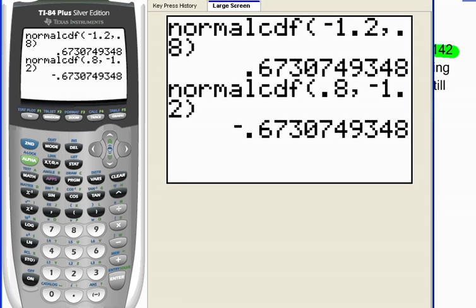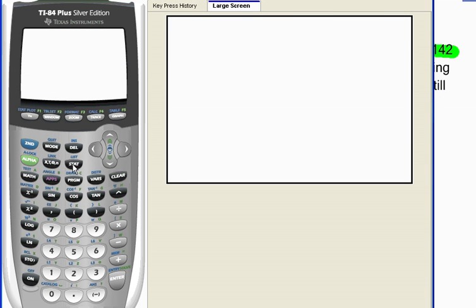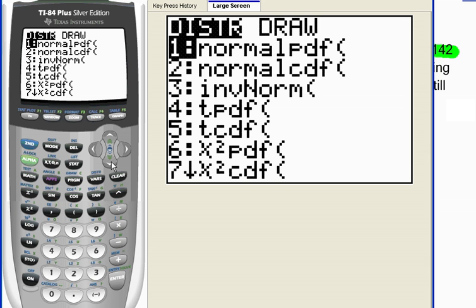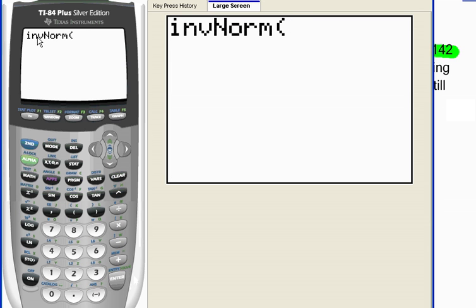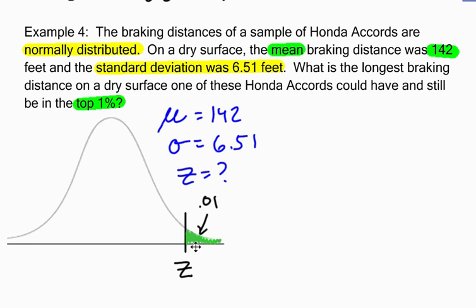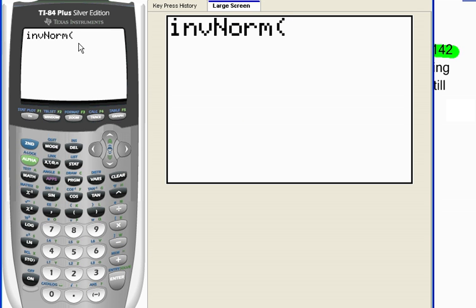What you want to use on your calculator is 2nd VARS, so you go to your distribution menu, and we want to go down to number 3, inverse norm. So I am using an inverse normal function to give the calculator an area, and then the calculator will give me the z-score that cuts off that area. Now the calculator always assumes that the value you are going to give to it is the value to the left. So if 1% is above this z-score, that means 99% is below it. The area to the left of that z-score that I'm looking for is 0.99.